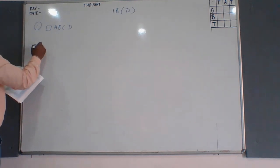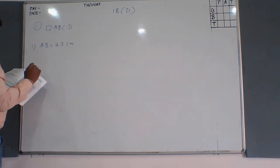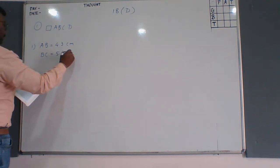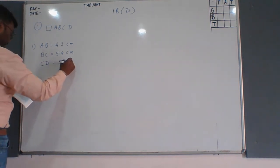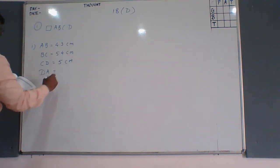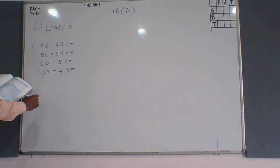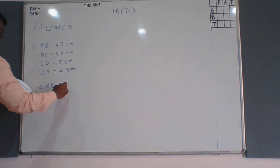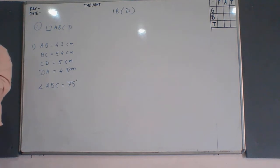In this first question we are constructing quadrilateral ABCD. The given measurements are: AD is 4.3 cm, BC is 5.4 cm, CD is 5 cm, DA is 4.8 cm, and angle ABC is 75 degrees.